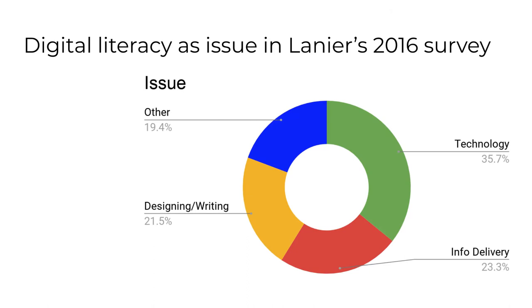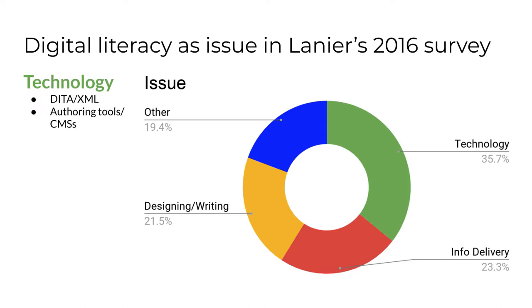In your assigned reading for this module, Lanier reports the results of another 2016 survey of tech comm professionals. In this case, the pros belong to the STC — that's Society for Technical Communication — the largest professional organization in the US. Lanier asked them what issues they faced and received a total of 667 issues, categorized into four types. Technology was the most mentioned issue; many professionals mentioned DITA or XML, authoring tools, and content management systems. This suggests that the move in industry to DITA, XML and HTML technology or tools was perceived as a very important issue for many professionals in 2016.